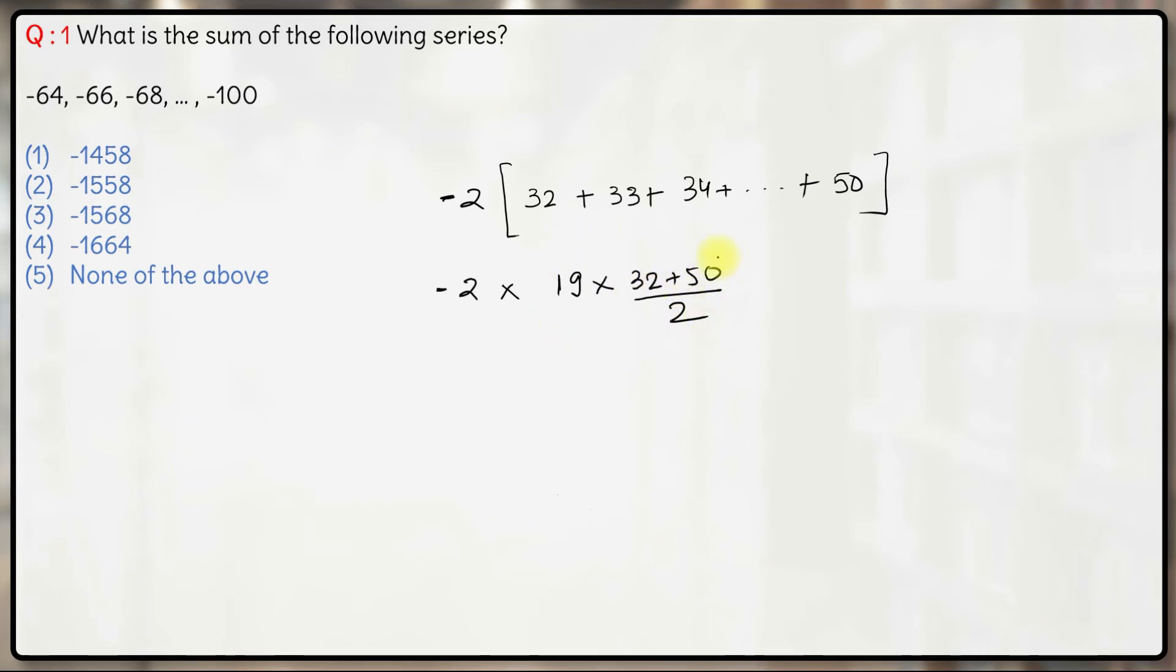This here is sum of an arithmetic progression. So 2 and 2 gets cancelled out, you have minus 19 into 82 over here. So minus 19 into 82 comes out to be minus 1558.